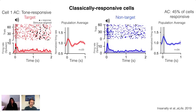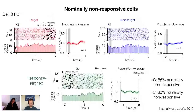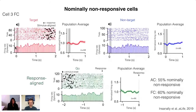We recorded classically responsive neurons in both regions. For example, an auditory cortical cell responsive to the target tone shows a peak in the histogram when trials are aligned to stimulus onset; the same cell is also responsive to non-target tones. A second archetype were ramping cells — for example, a frontal cortex cell with activity increasing before the animal's response. However, the majority of recorded cells have complex response profiles with no obvious structure — not reliably responding to target or non-target tones, nor displaying any ramping activity.